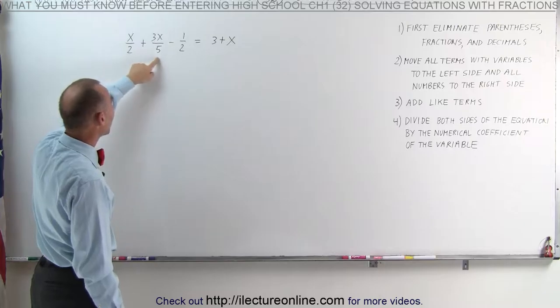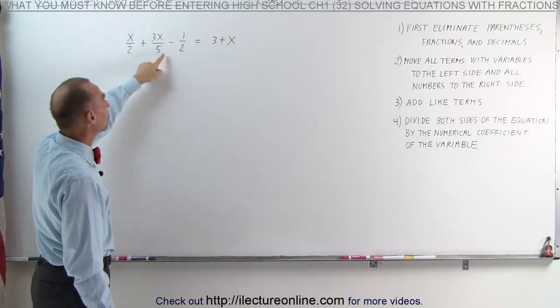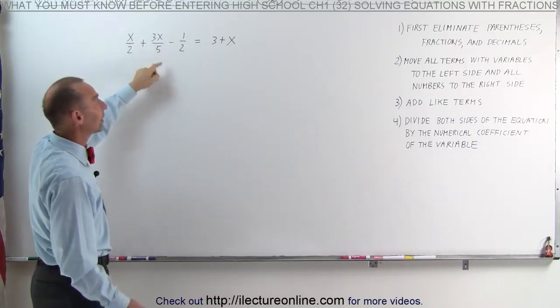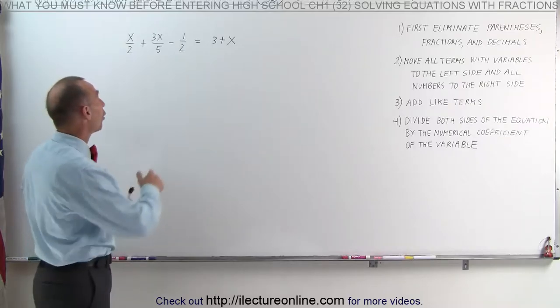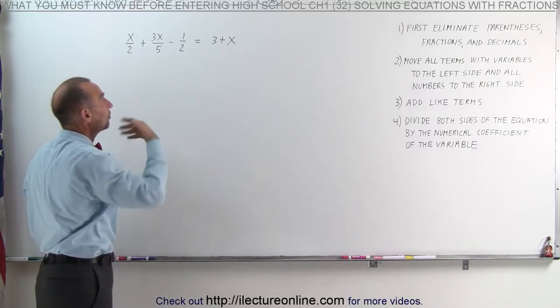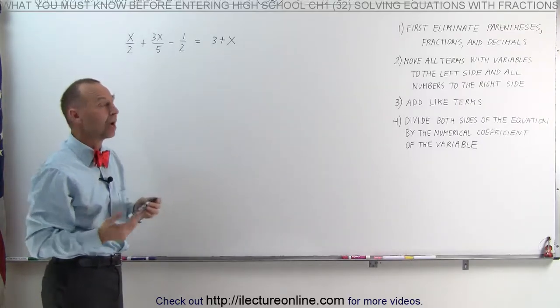Notice we have denominators 2, 5, and then 2 again. If we multiply these two together, 2 times 5, that gives us 10. And notice that all three denominators evenly fit into 10, which means that's our lowest common denominator.